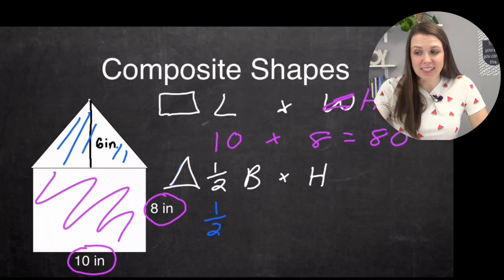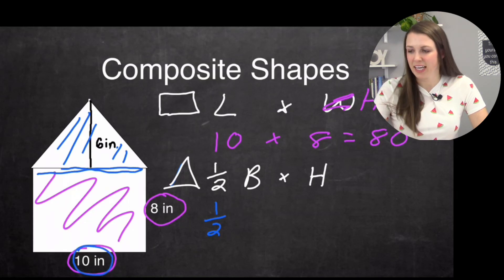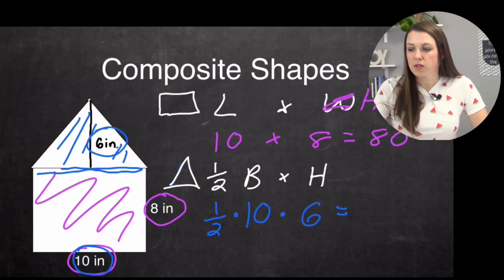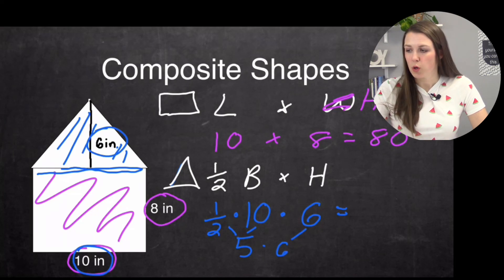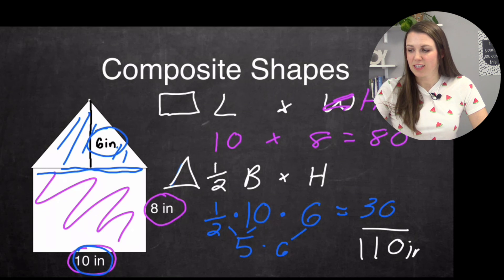So what I'm going to do is I need to bring down that one half. And my base is right here. But notice that's that 10. So I'm going to put that 10 again. So we have one half base, so one half times 10 times my height, and my height is that six inches. So one half, what is one half of 10? That's simply five. And then bring down my six. And I have five times six, which is 30. Add the two together, 80 plus 30 is going to be 110 inches squared.